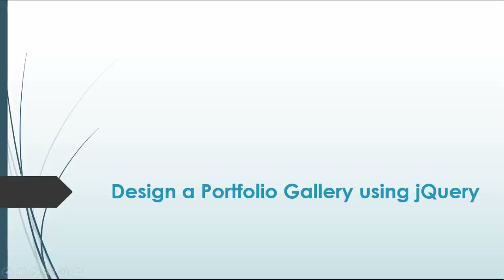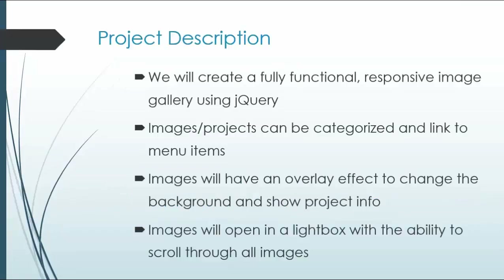In this chapter, we're going to build a portfolio image gallery — a fully functional, responsive image gallery using jQuery. The images and projects can be categorized and linked to menu items. We'll have a main menu with an 'All Projects' link to show all images, and also links like design or programming that will show only the images tagged with those categories.